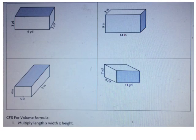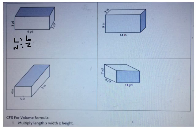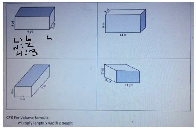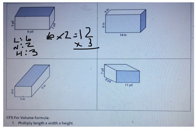Now let's try a few more. The figure on the top left has a length of 6, a width of 2, and a height of 3. Multiplying length times width times height: 6 times 2 is 12, and 12 times 3 gives a volume of 36 cubic yards.